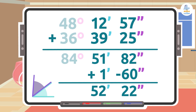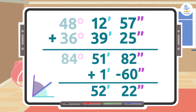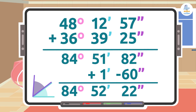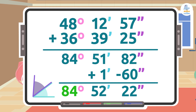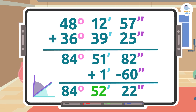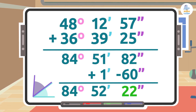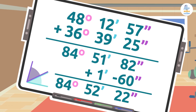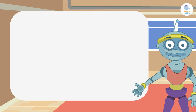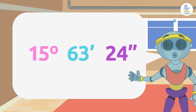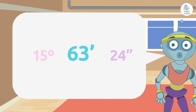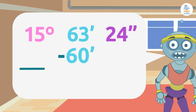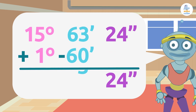In our example the minutes are less than 60, so this calculation is complete. The final result is 84 degrees, 52 minutes, and 22 seconds. Remember that if the minutes value is greater than 59, we would do the same calculation but in the minutes and degrees column.